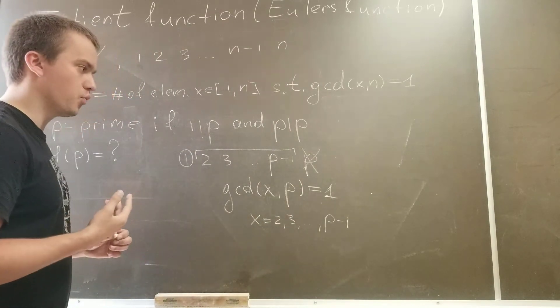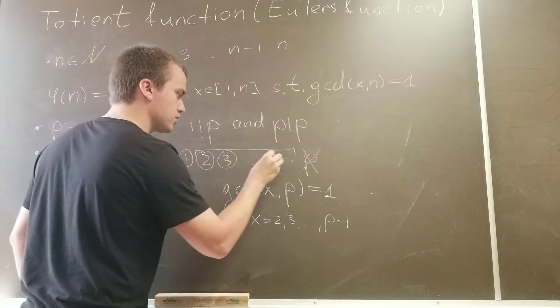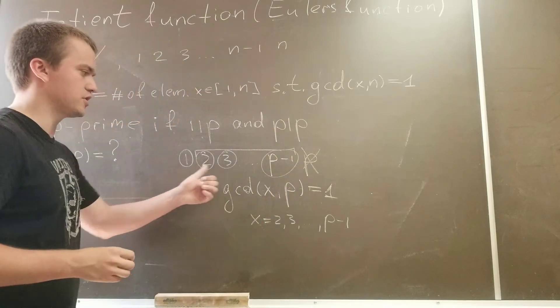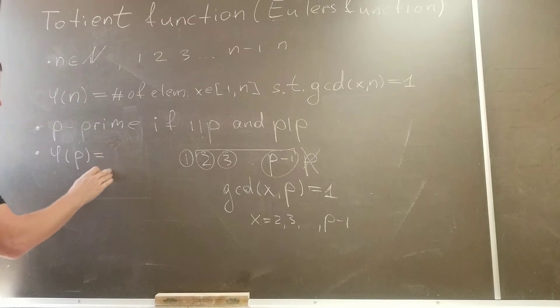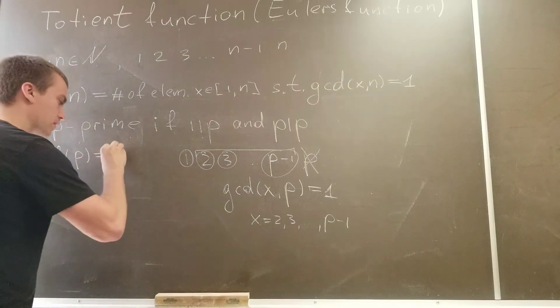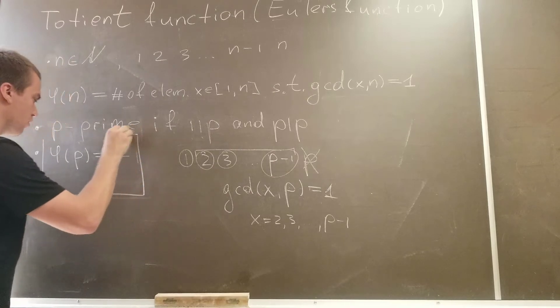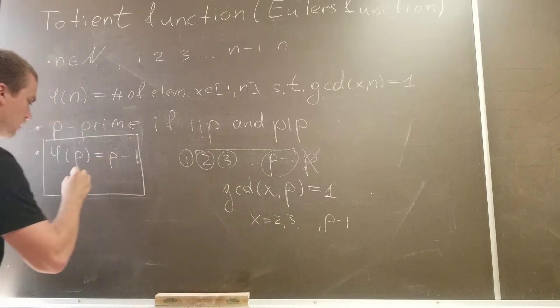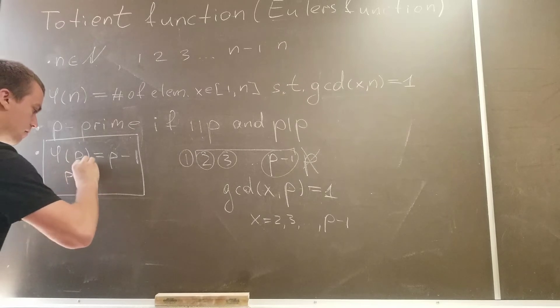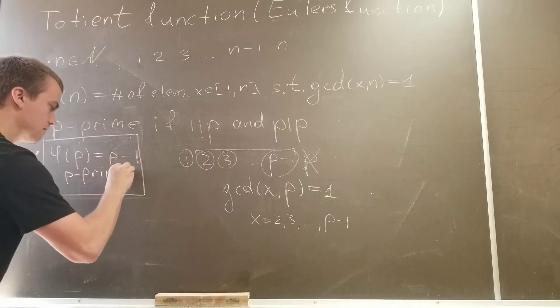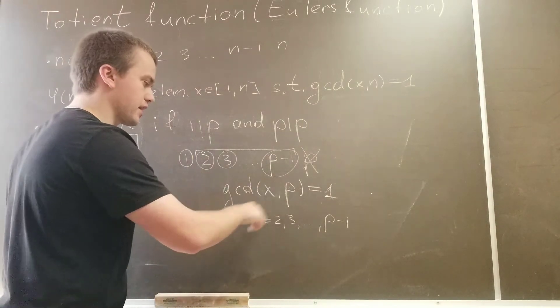And why is this true? So first let's say we know all these numbers are going to have gcd with p equals to 1, so our answer is that Euler's function phi of p, we're going to have p minus 1. So we're saying that our Euler's function phi of p equals p minus 1 when p is prime. So this is true for any number, but let's show that this is actually the case.